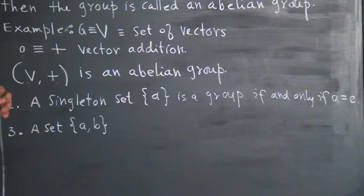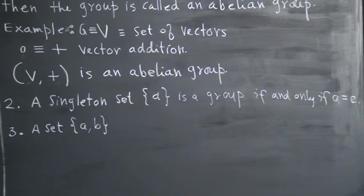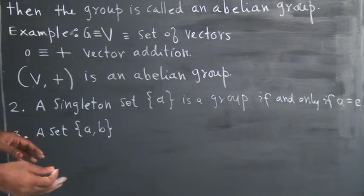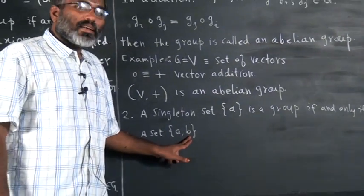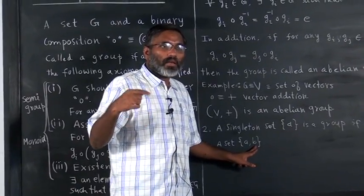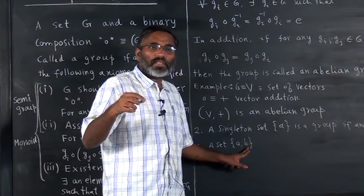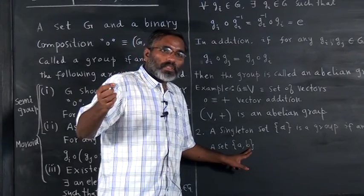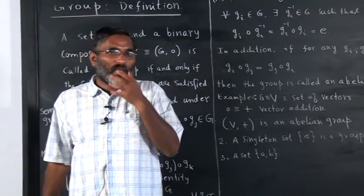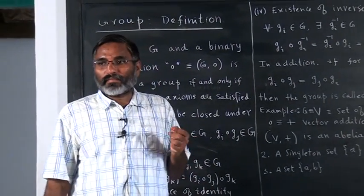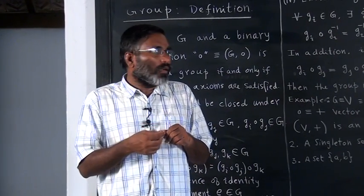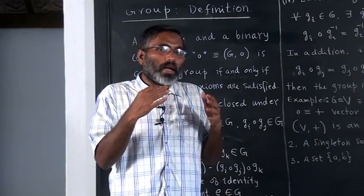B need not be identity, but B is an element which should satisfy some property. Supposing A is identity, then B need not be identity, but what is B times A? B composed with E is B only. E composed with B is B only. B composed with B — what should it be? It should be identity. B composed with B will not be B. B composed with B should be identity.